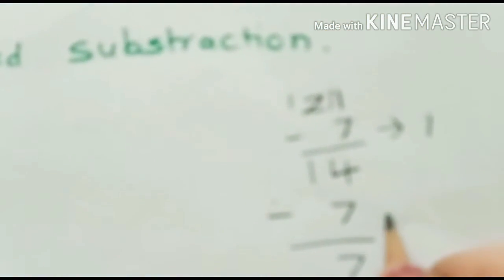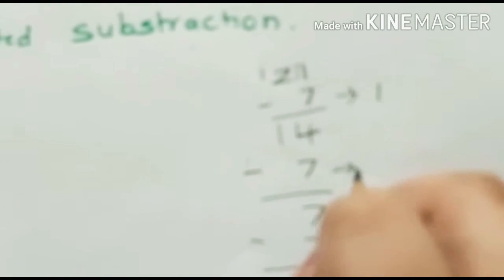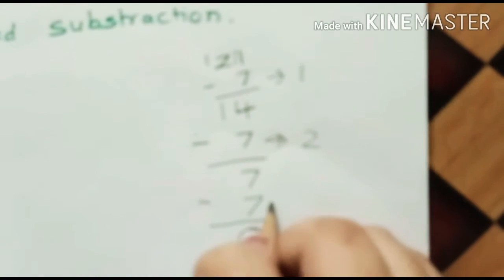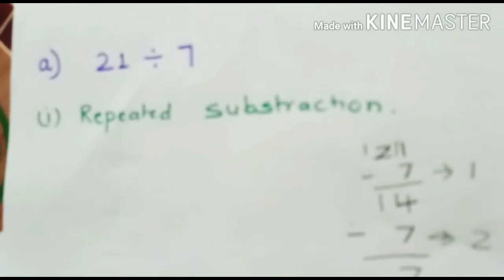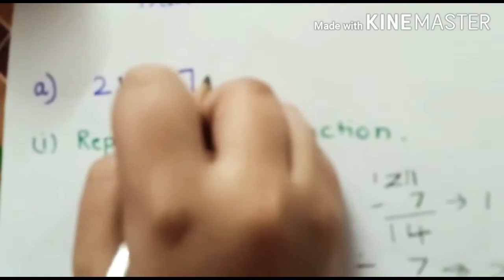As we see, we got the answer 0 after subtracting 7 three times. So, we can say 21 divided by 7 is equal to 3.